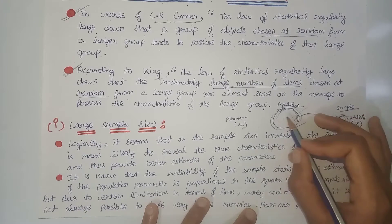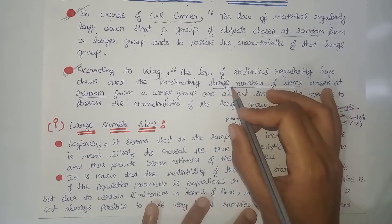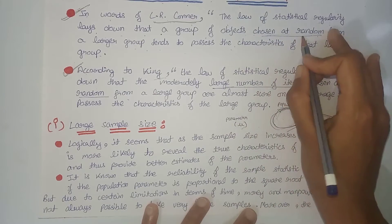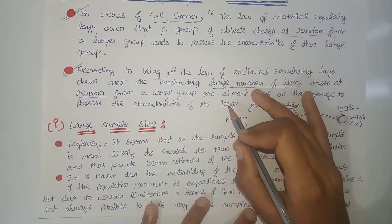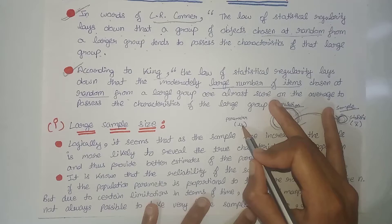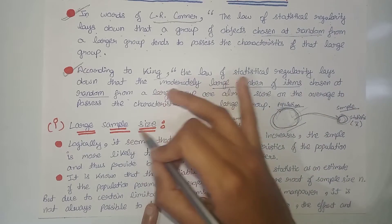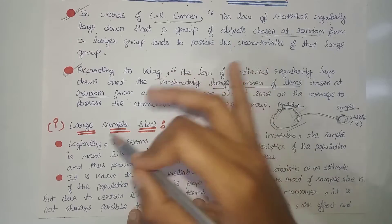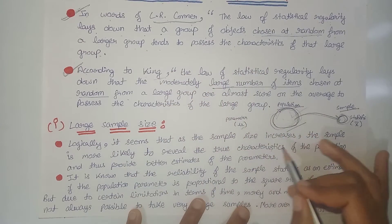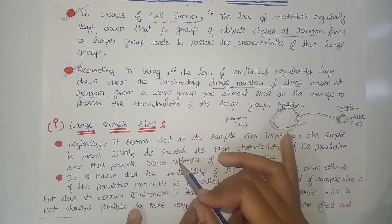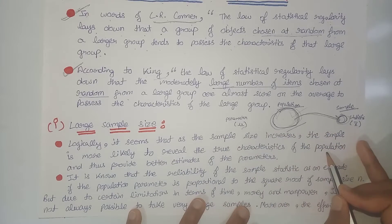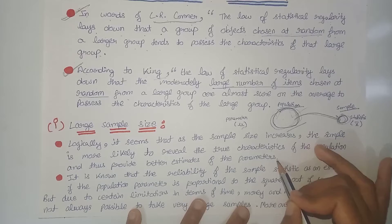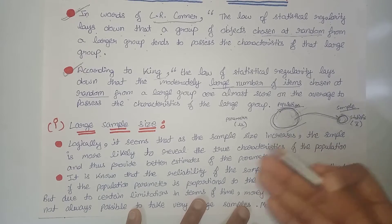Basically, these two definitions are based on two main points. First, the sample we choose from the population must be of large size, and second, it must be chosen at random. Now let's discuss these two main points. The first point is large sample size — the size of the sample must be large. Logically, as the sample size increases, the sample is more likely to reveal the true characteristics of the population.